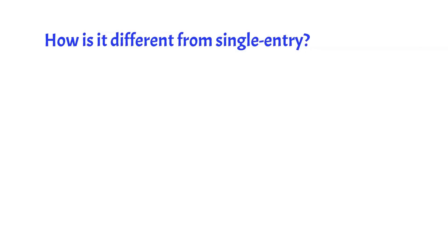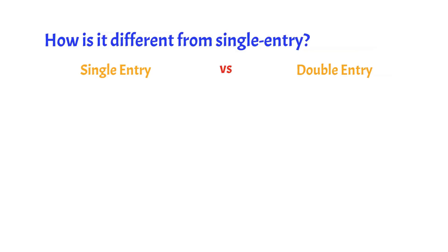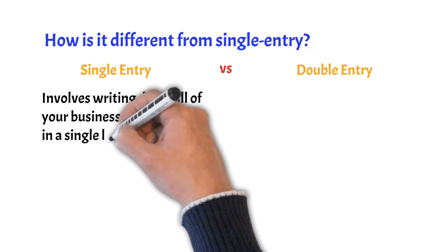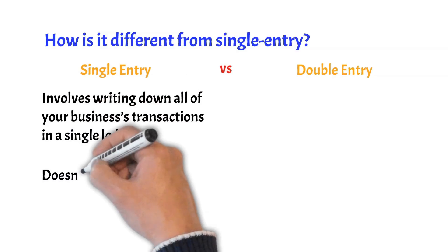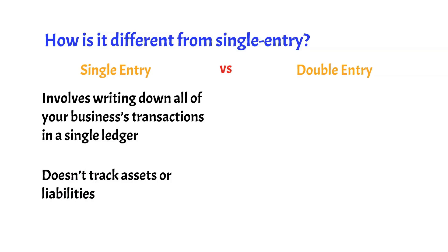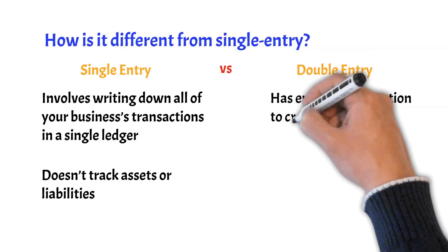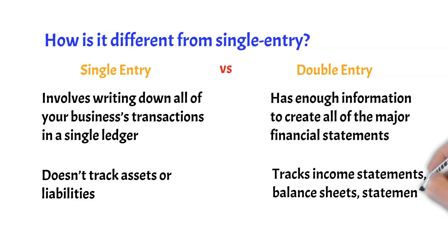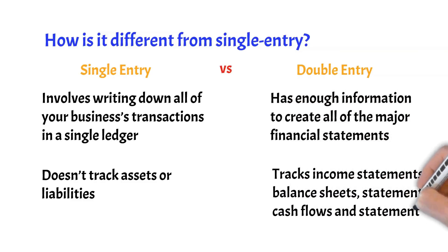How is double-entry different from single-entry? Single-entry accounting involves writing down all of your business's transactions, such as revenues, expenses, payroll, etc., in a single ledger. Single-entry doesn't track assets or liabilities, is prone to mistakes, and doesn't tell you much about the state or health of your business. Unlike single-entry, the double-entry system provides accountants with enough information to create all of the major financial statements, including income statements, balance sheets, statements of cash flows, and statements of retained earnings.